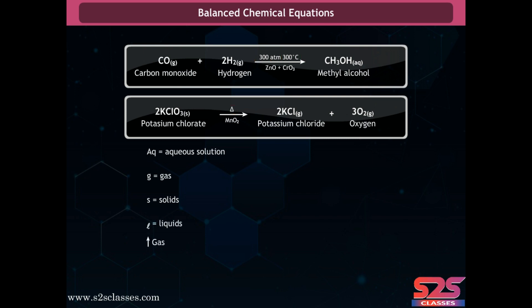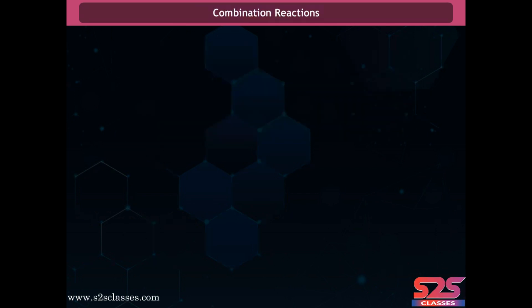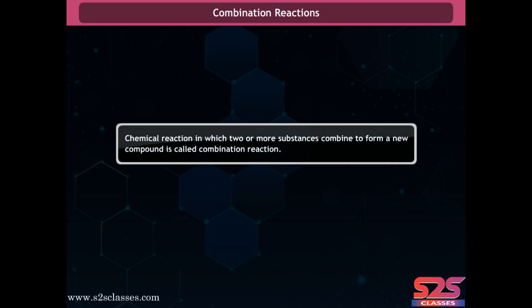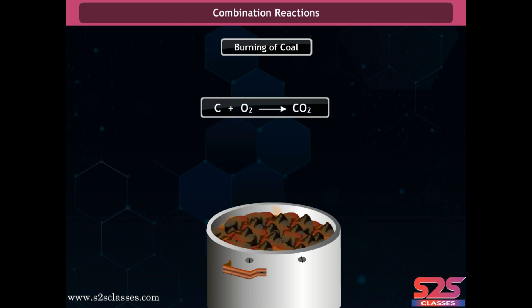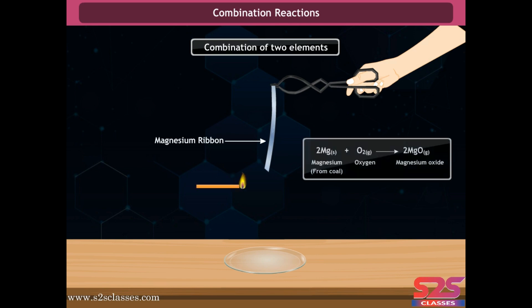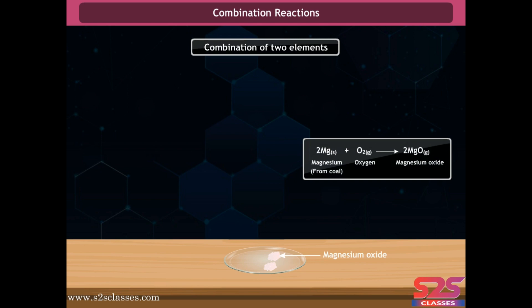A combination reaction is one in which two or more substances combine to form a new compound. For example, coal is primarily carbon; when it burns, it combines with oxygen to form carbon dioxide. On burning of magnesium ribbon, magnesium combines with oxygen present in the air to form magnesium oxide. In this reaction, two elements combine to give a single compound, MgO.